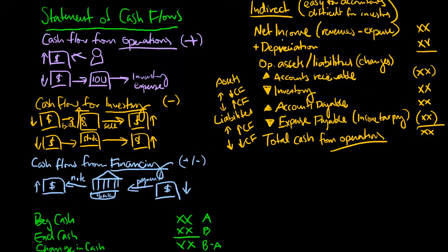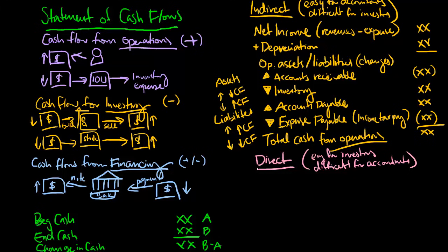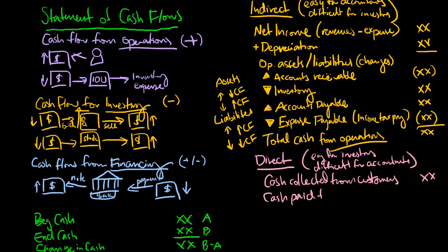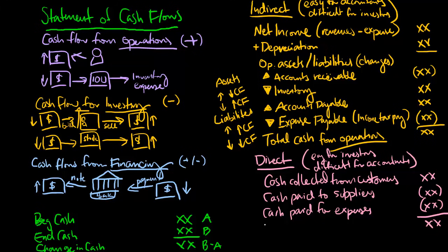The indirect method is easy for accountants but difficult for investors. It's hard for investors to look at these changes in accounts and really see what's going on. This is why the SEC prefers the direct method. The direct method is easy for investors but difficult for accountants to prepare, because we focus on more general accounts. The direct method ignores net income and depreciation — instead it looks at cash collected from customers, which should be an increase, and cash paid to suppliers and for expenses, which should be decreases. Importantly, the cash provided by operations is going to be the same for both the indirect and the direct method — these two values will match.